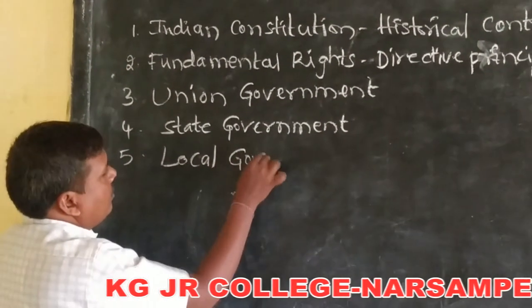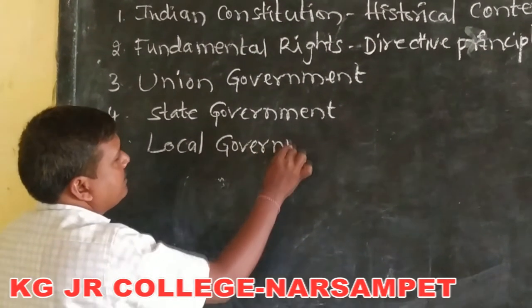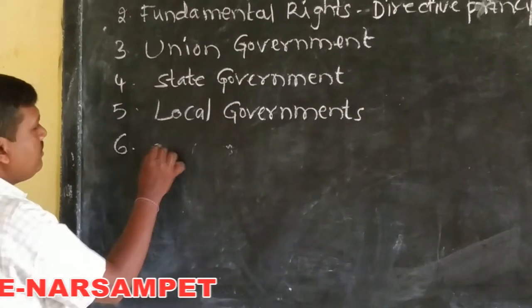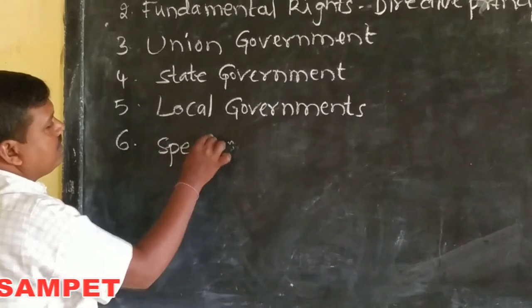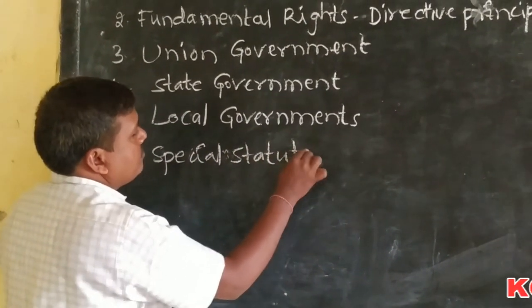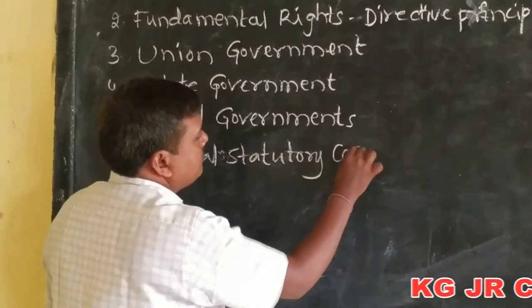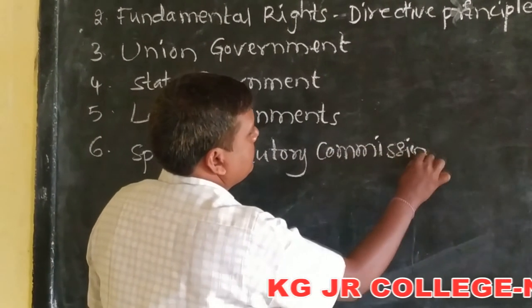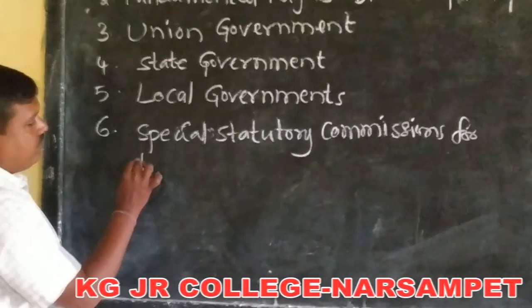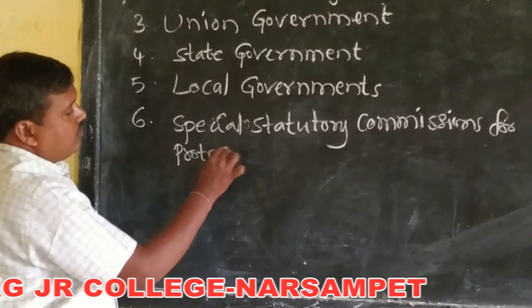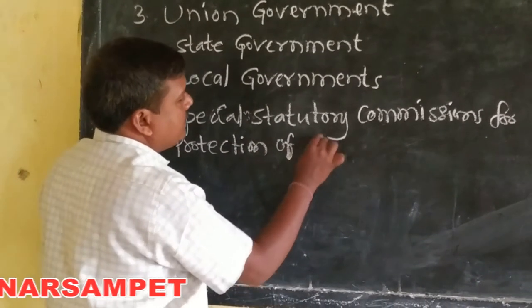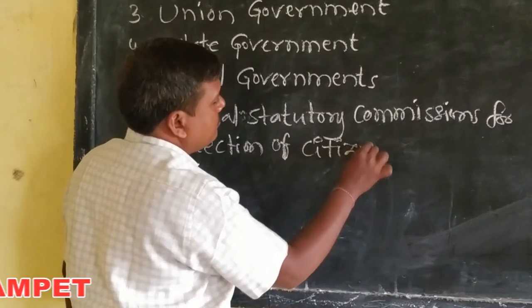Fifth one is Local Governments. Sixth one is Special Statutory Commissions for Protection of Citizen Rights.